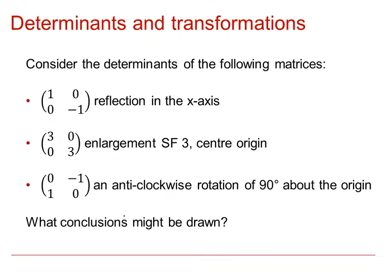Looking at specific examples: a reflection in the x-axis matrix has determinant −1; an enlargement of scale factor 3 centred on the origin has determinant 9; and an anticlockwise rotation of 90 degrees about the origin has determinant 1. Consider what a determinant of −1 means for orientation, what a determinant of 9 means for area, and what a determinant of 1 means for a rotation. We will explore these in a GeoGebra file.